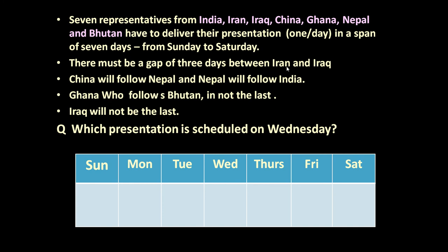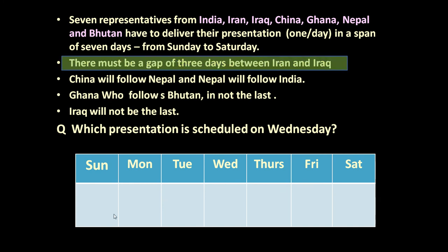There must be a gap of three days between Iran and Iraq. Where Iran and Iraq will be is difficult to say, but there must be a gap of three days between them. This means it is a total slot of five days — five days are occupied by Iran, Iraq, and three more countries.